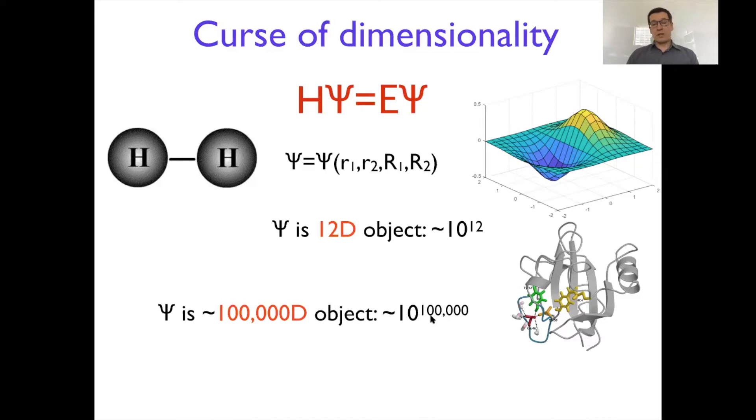So big that someone made a calculation that even if you take all atoms in the universe to build a computer to store this object, you will run out of matter in the universe, essentially. And this is a big problem of quantum mechanics for large systems, because with every particle you get more dimensions in your wave function, and that causes exponential growth of complexity. That's the main problem.